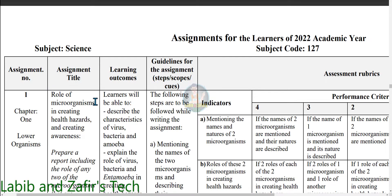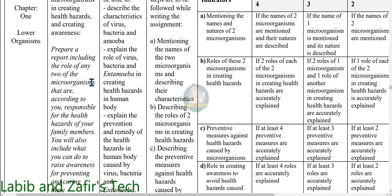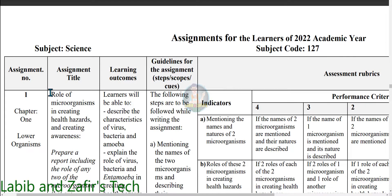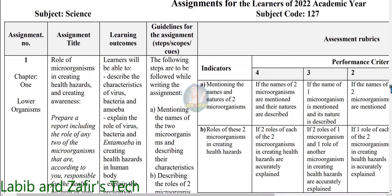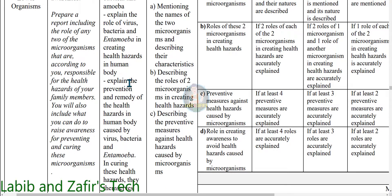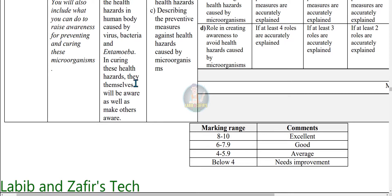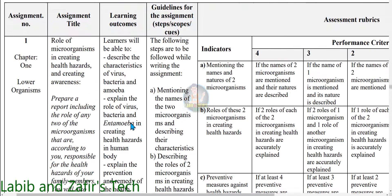This is not an assignment title — this is just a description. You will write the title yourself and there is no restriction. Now the learning outcomes: Learners will be able to describe the characteristics of virus, bacteria, and amoeba. Explain the role of virus, bacteria, and amoeba in creating health hazards in the human body. Explain the prevention and remedy of health hazards caused by virus, bacteria, and amoeba, and make themselves and others aware.